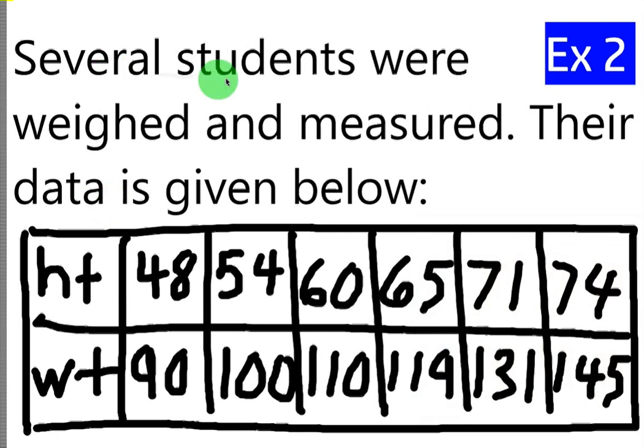Let's read this. Several students were weighed and measured. Their data is given below. Here's their height at the top - by the way, I didn't have a lot of room on here. The height on the top here is in inches, and then on the bottom the units are pounds. So for example, this first data point: this person is 48 inches tall and they weighed 90 pounds - that'd be somebody in elementary school.